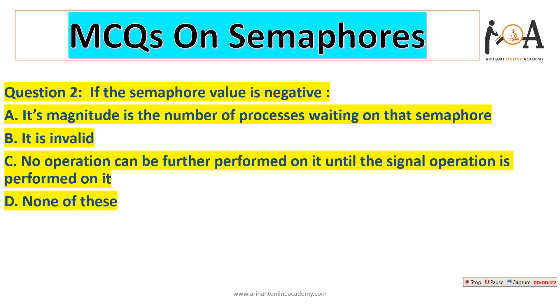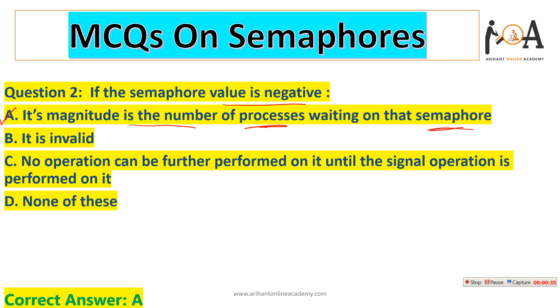The next question: if the SEMA 4 value is negative, it simply means that that many processes are waiting. The magnitude of a negative SEMA 4 value is the number of processes waiting on that SEMA 4. So option A is the correct answer.